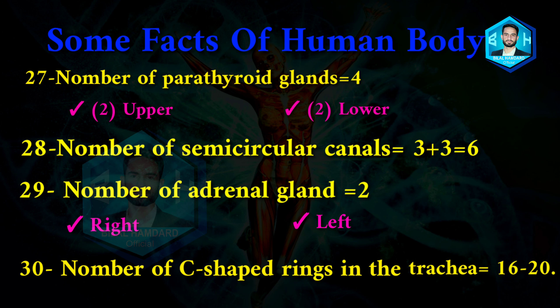Number thirty: number of C-shaped rings in the trachea is 16 to 20. In the trachea, there are 16 to 20 cartilaginous rings. These rings are open at the back and are not complete circles.